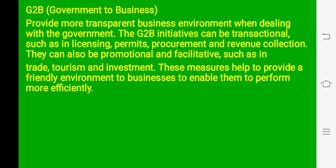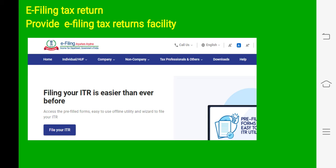Now we will understand the interaction between government to business. With the emerging of technologies in government services, the government is providing a very user-friendly environment to businesses. Through e-government, it is very convenient for businesses to apply for licenses and do payment of various types of taxes. For e-filing tax returns, time is very important in business, so now businessmen can easily file their tax online without going to chartered accountants, saving time.